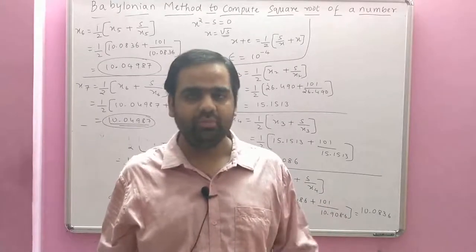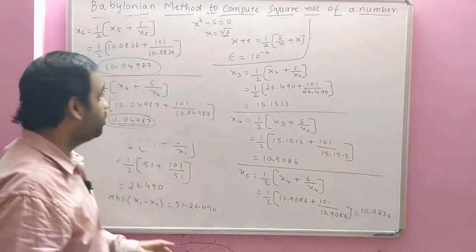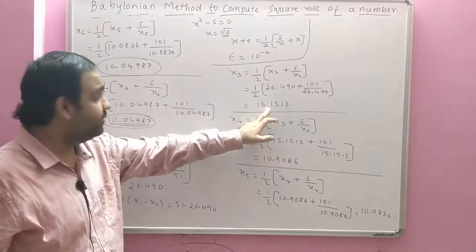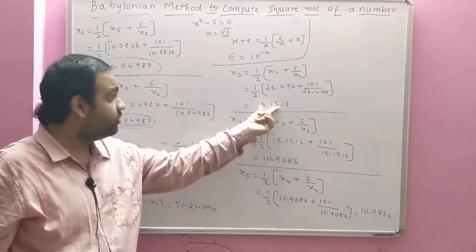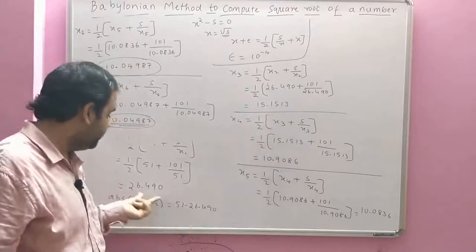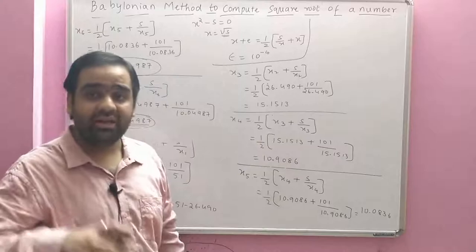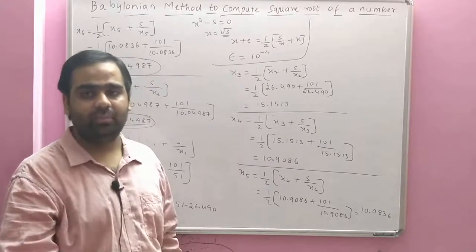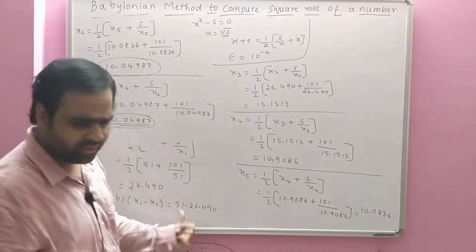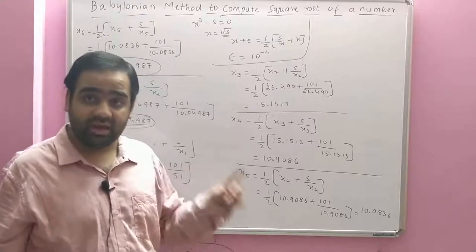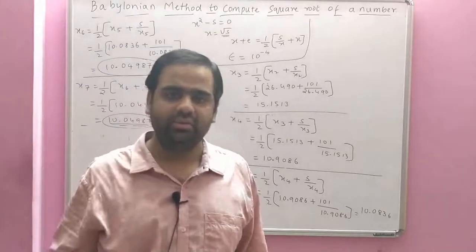Since we don't know in advance when it will converge, we use an infinite while loop and break when convergence is reached. Each new value is computed from the previous value, so we maintain a previous value and a current value, take their absolute difference, and if it is ≤ epsilon we stop and output the current value as the answer.